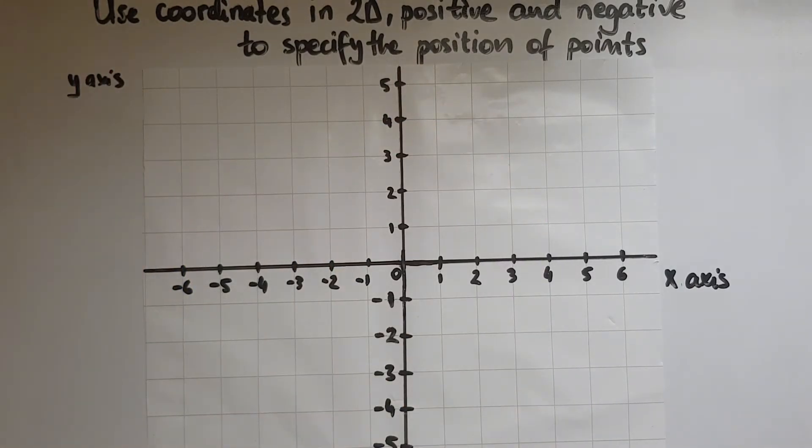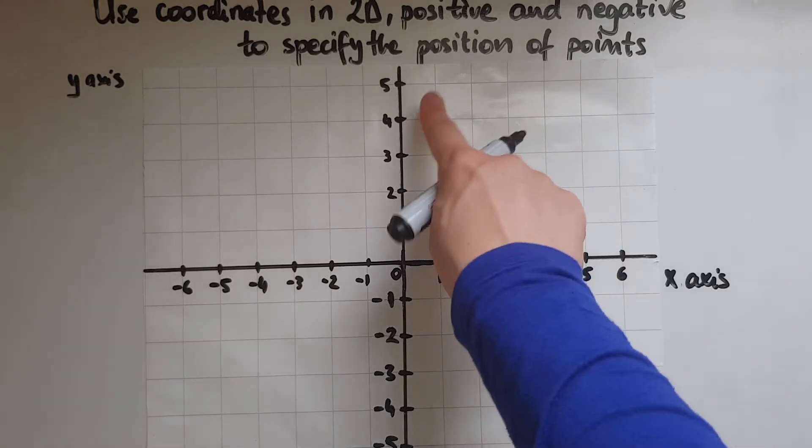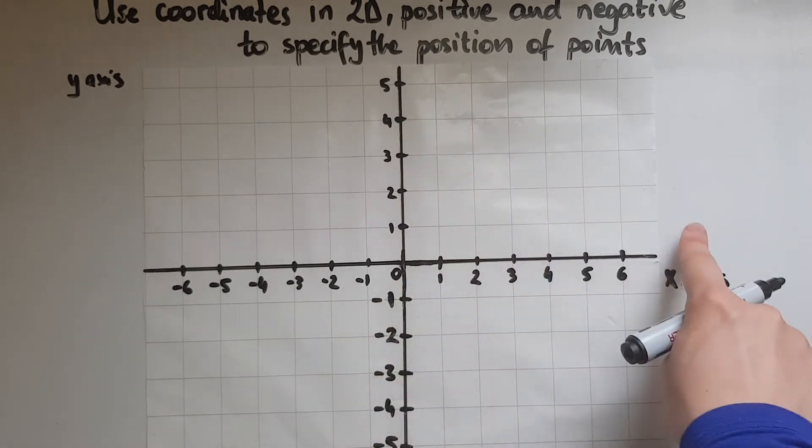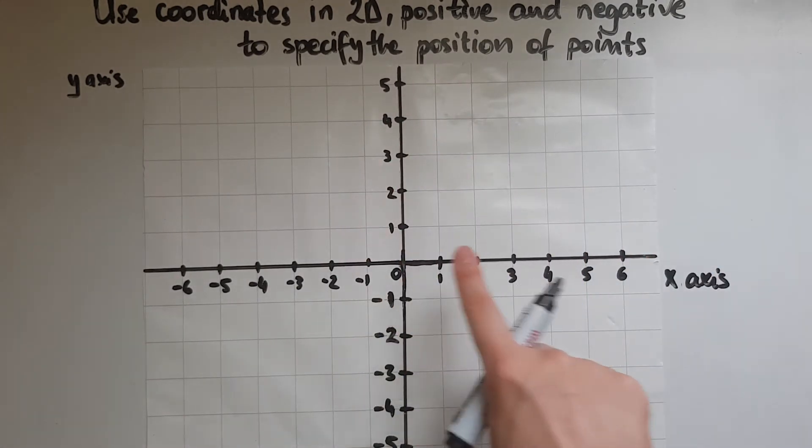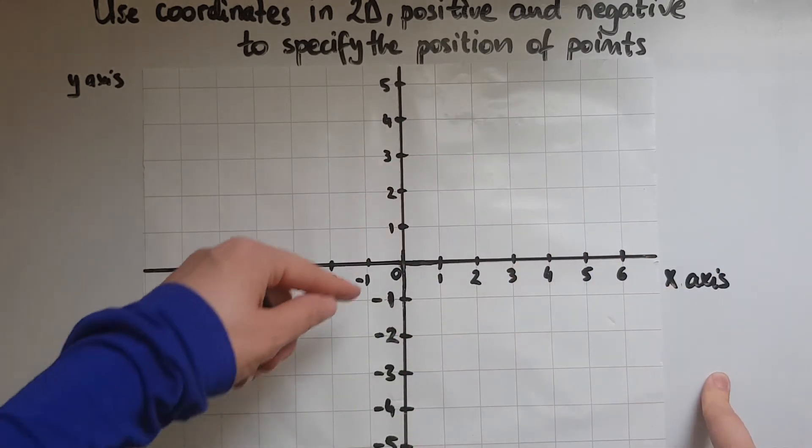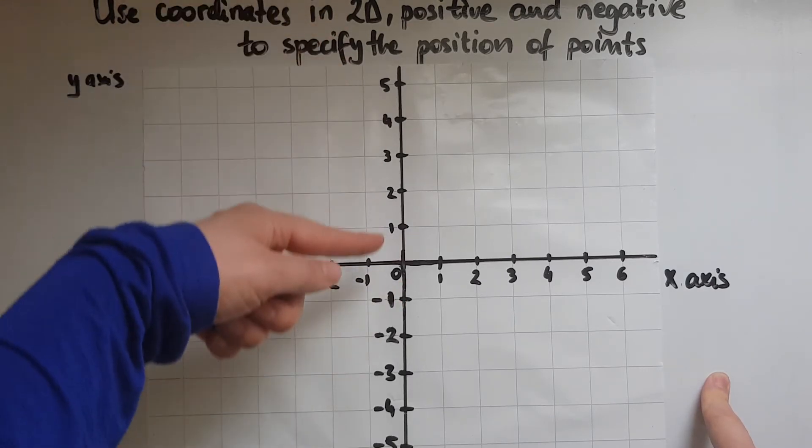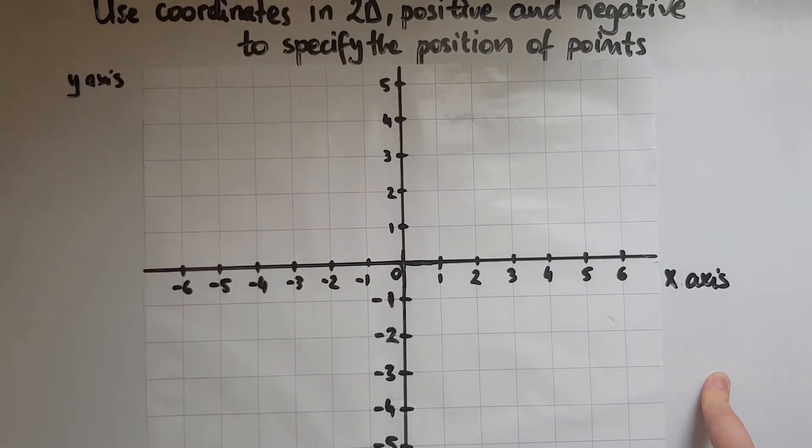This also resembles the graphs you've been using when showing or representing data. You normally use this part of the graph where you'd have sometimes time at the bottom and numbers going up. What this is, is an extension of that with negative numbers as well.